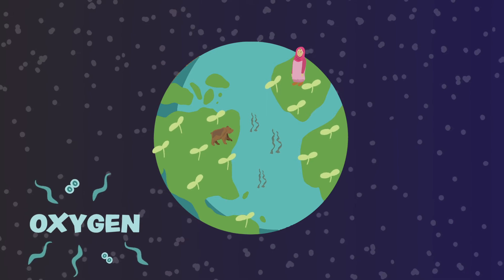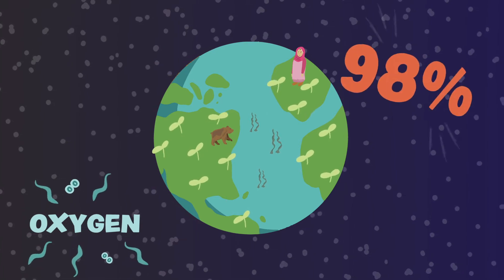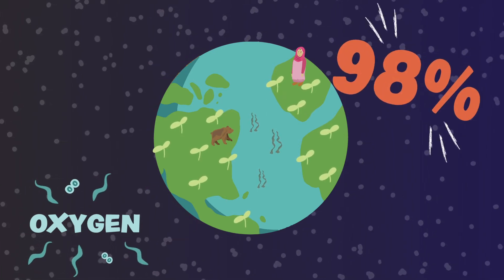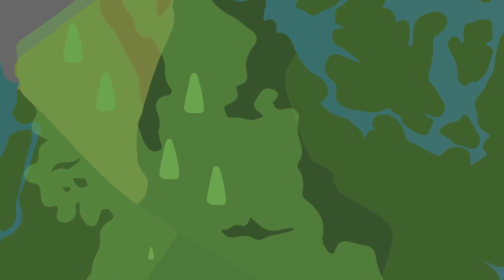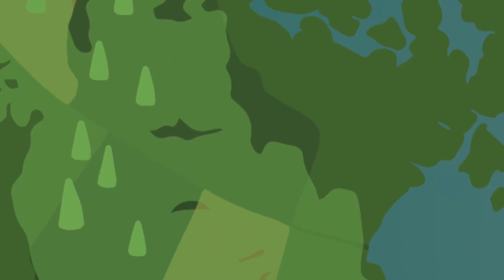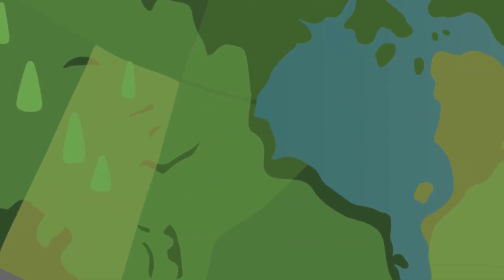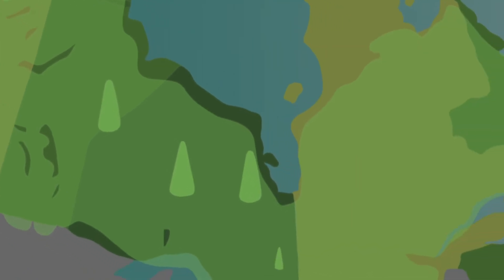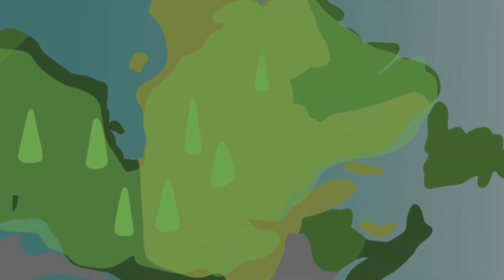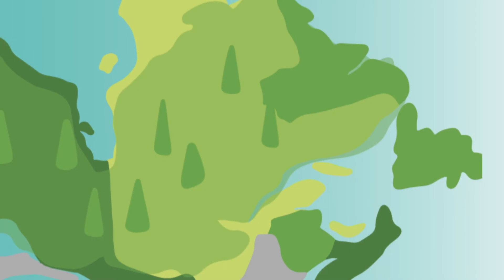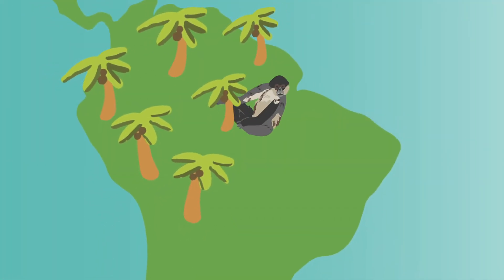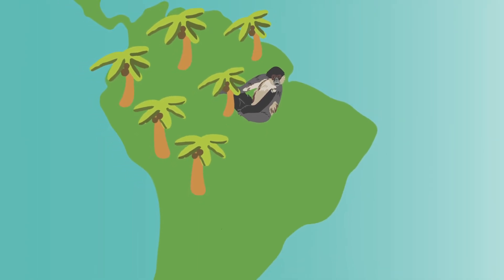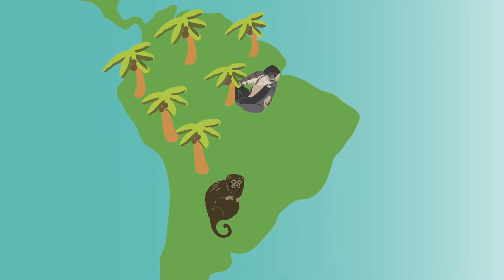People and animals need oxygen to live. Plants produce 98% of all the oxygen we breathe. Over half of Canada is covered by the boreal forest, the largest forest in the world. The boreal forest expands across many northern countries and helps produce much of the world's oxygen, just like the Amazon rainforest in South America.